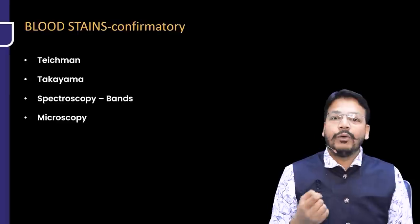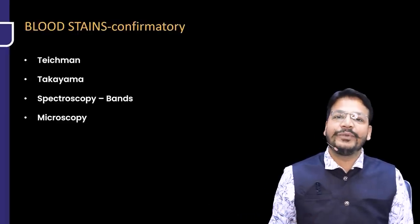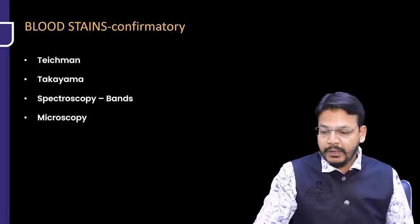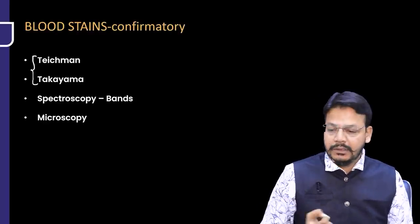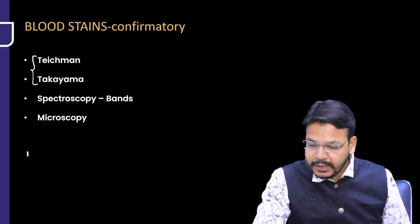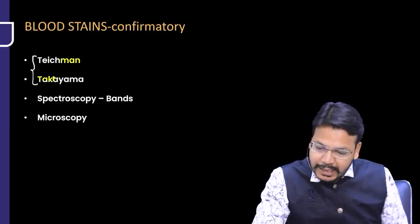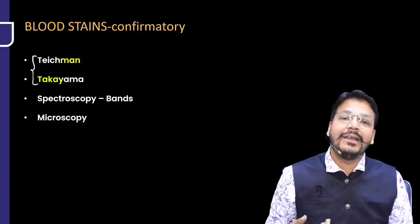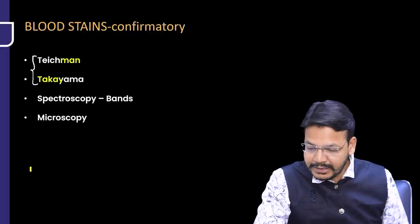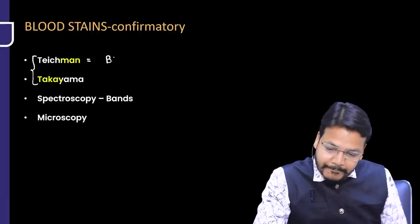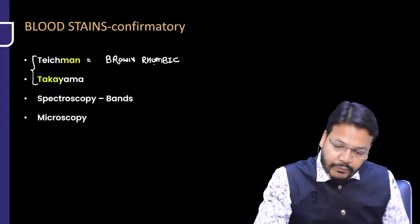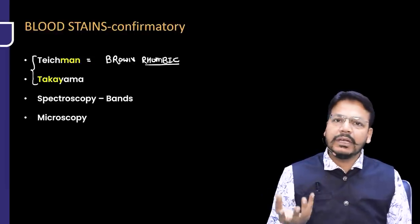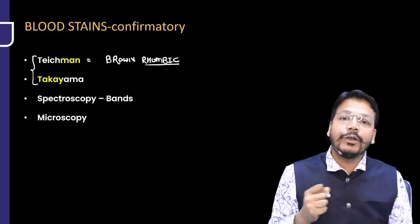Here's the explanation. These are the presumptive or screening tests. Now coming to the confirmatory tests — two very important ones: Teichmann test and Takayama test. Both are microchemical tests. Teichmann gives a dark brown rhombic crystal. Takayama gives a pink feathery crystal. These crystals are seen under the microscope, which is why they are called microchemical tests.